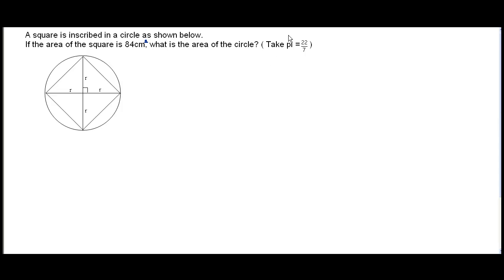The pi here is actually this symbol. Let's first highlight some of the important facts in the question. Area of the square, 84 cm², and pi, 22 over 7.